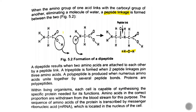If you have two amino acids, the result is a dipeptide. If it is more than two, then it will be a tripeptide. If it is more than three, then it will be a polypeptide. There are many peptide linkages in a peptide chain.